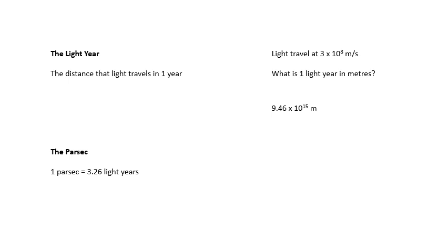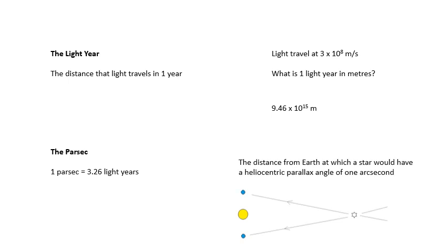Parsec. This isn't a definition of a parsec. A parsec is about 3.26 light years. You do have to be able to define the parsec, however. And what is a parsec? I've seen an A-level question define the parsec. My advice to you would be learn this sentence: The distance from Earth at which a star would have a heliocentric parallax angle of one arc second.